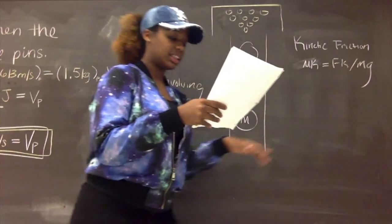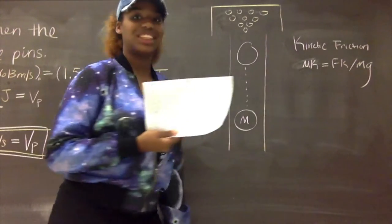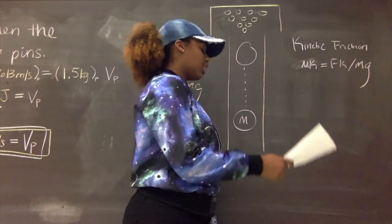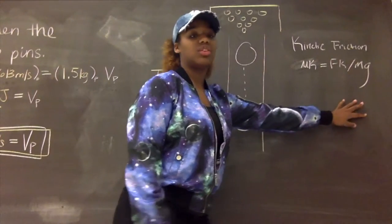And here's the equation to find kinetic friction. Mu K stands for the coefficient of kinetic friction. F K stands for force due to kinetic friction. M stands for mass and G stands for gravity.